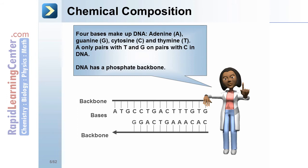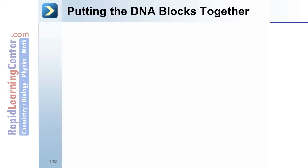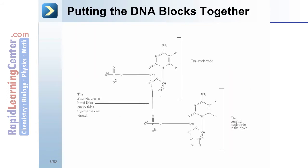DNA is a double-stranded molecule. Putting the DNA blocks together. These are two nucleotides together. Notice the one on top. One nucleotide. The second. The second nucleotide in the chain. Also notice the phosphodiester bond linking the nucleotides in one strand.